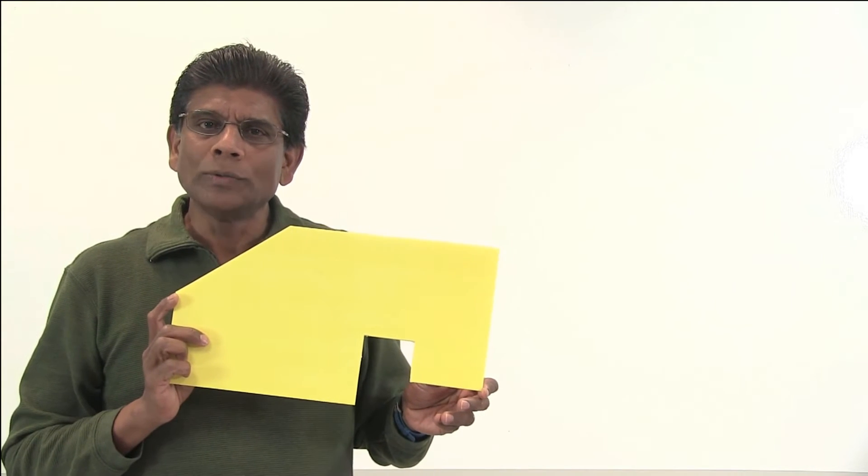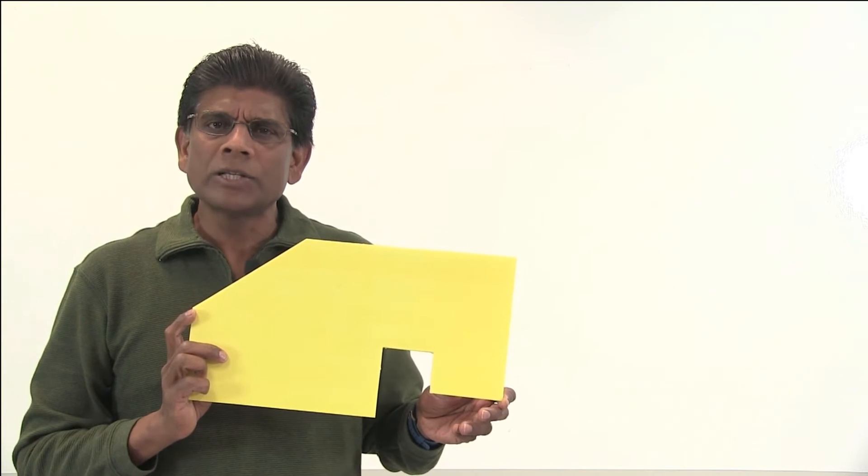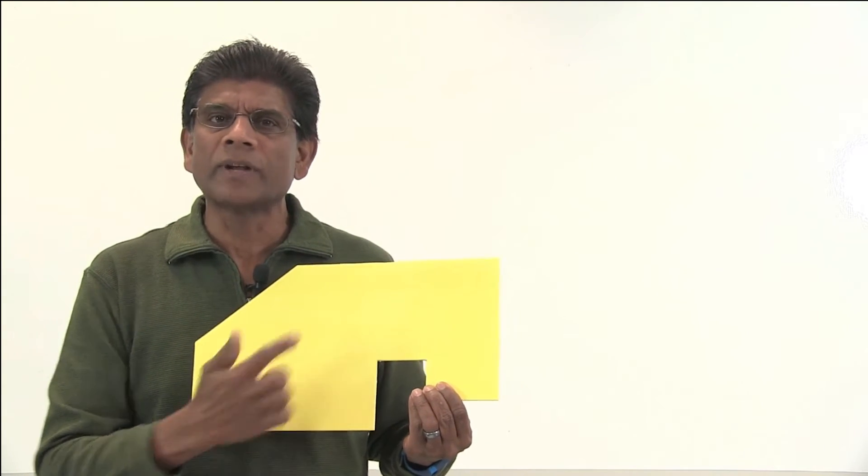For example, here is an irregular shape cut out of a poster board. I can balance this shape by supporting it right here under the center of gravity.